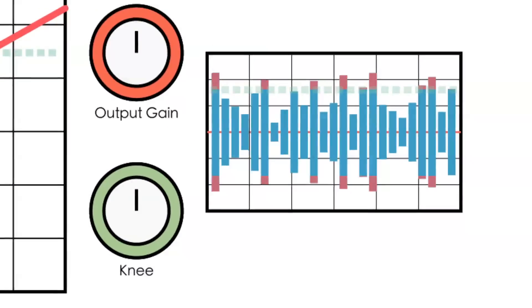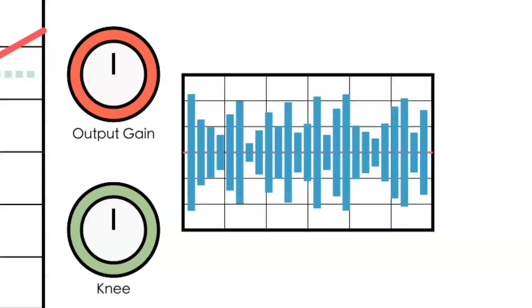After you have adjusted all the compression settings the signal's overall level will be somewhat reduced. The output gain allows you to make up for the lost amplitude as a result of the applied compression.